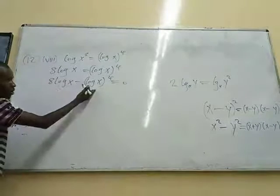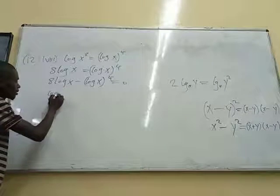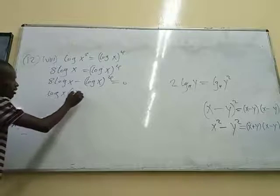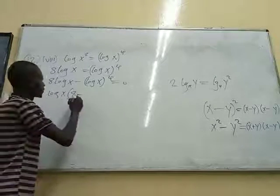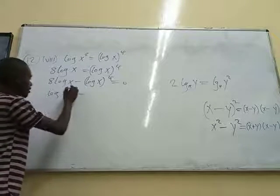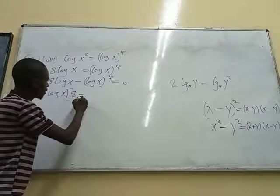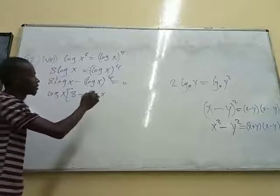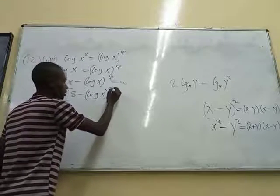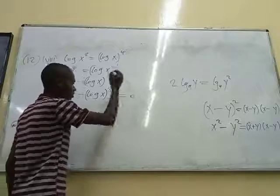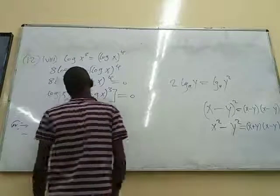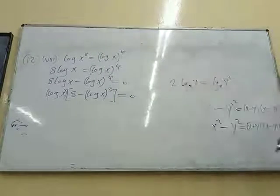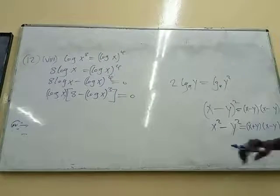So we can factorize the log. You can see log is common there. We can write log x outside. Here we're just going to remain with 8, then we say minus. And then here we're going to have log x raised to power 3, like that, is equal to 0. I've just factorized. I hope we're all clear up to this point.